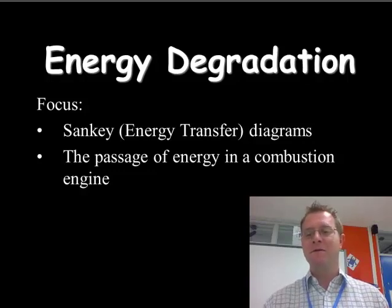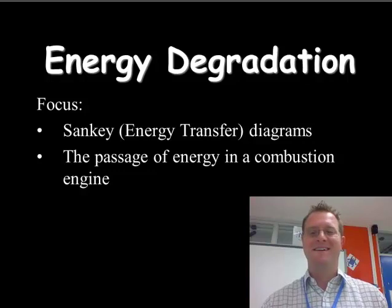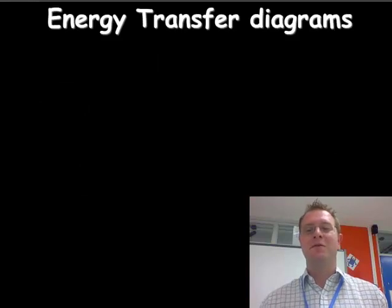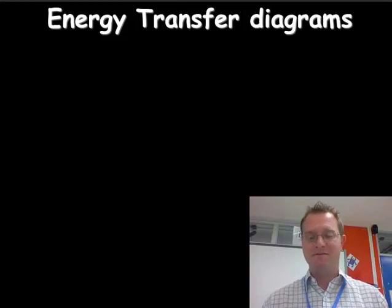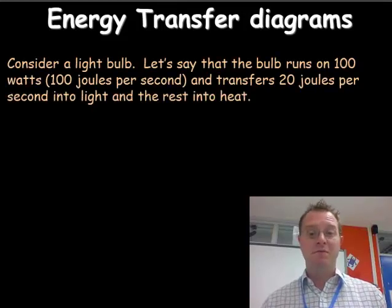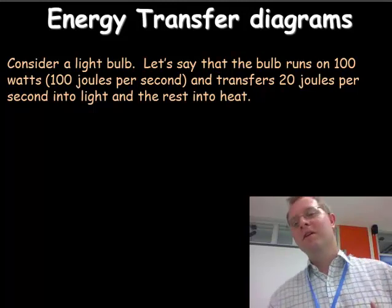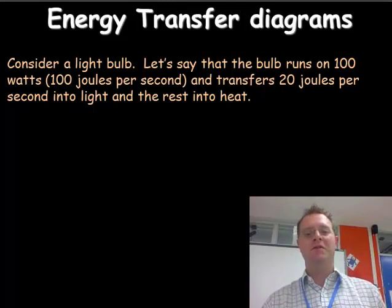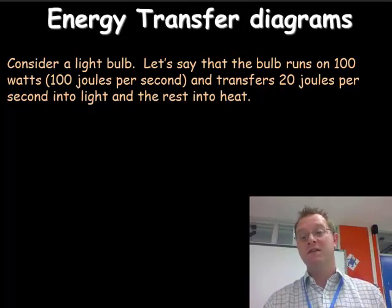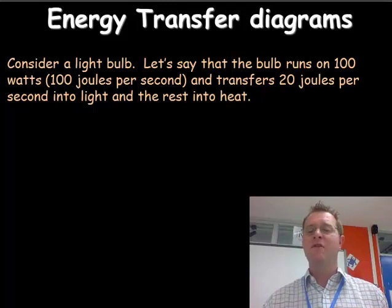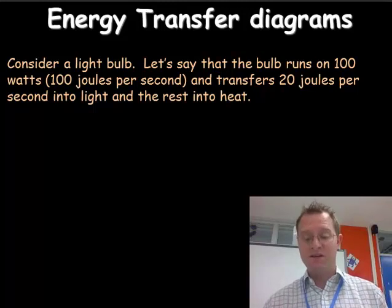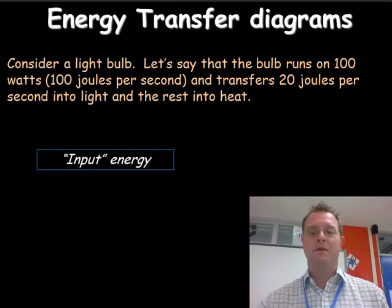Those are the two things that we focus on during this session. First of all, we're going to talk about energy transfer diagrams, often known as Sankey diagrams. I'm going to introduce a general situation. I've got a light bulb that runs on 100 watts, so 100 joules per second, and this transfers 20 joules per second into light and the rest is transferred into heat.